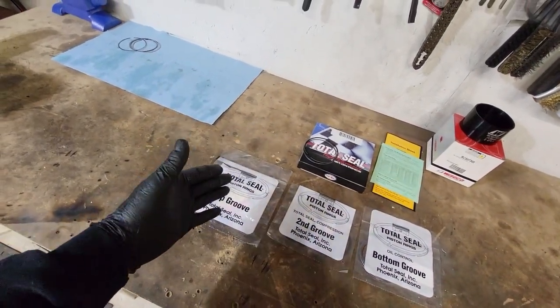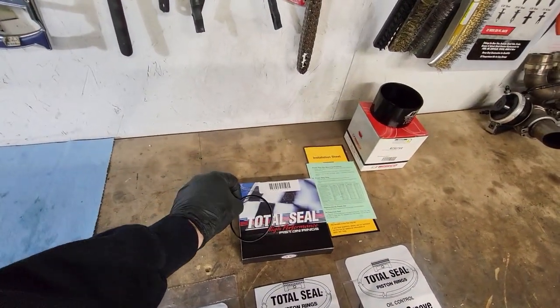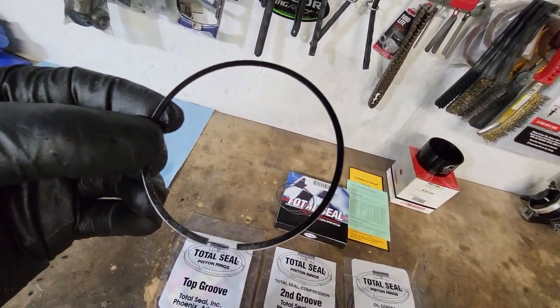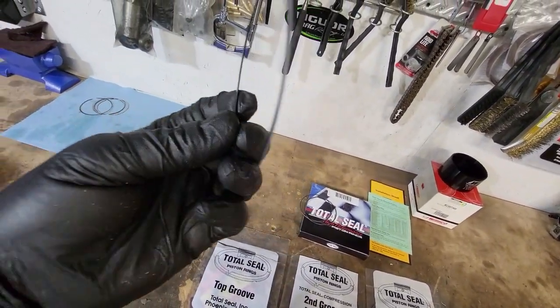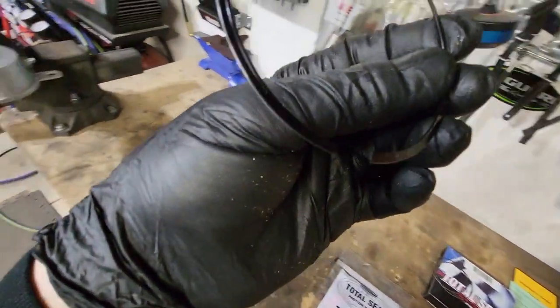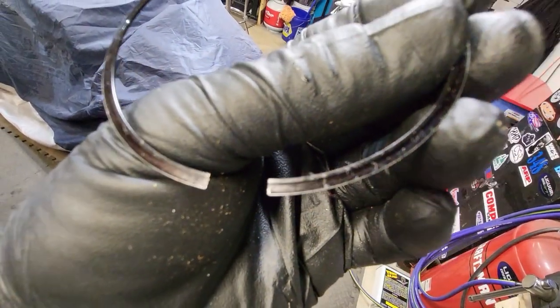And the reason it's gapless is I will show you here. So here is basically your top ring. Looks pretty normal, right? Well, if you flip it over on the bottom side, I'll try to get some good light on this. You can see it's stepped.